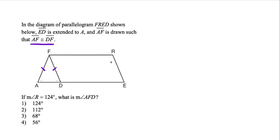So we're told the measure of angle R is 124 degrees, but one property we need to know about parallelograms is that opposite angles are equal. So this angle down here also has to be 124 degrees because it's opposite of angle R. And now we could use the fact that on a straight line we have 180 degrees, so if we already have 124, we subtract that from 180.